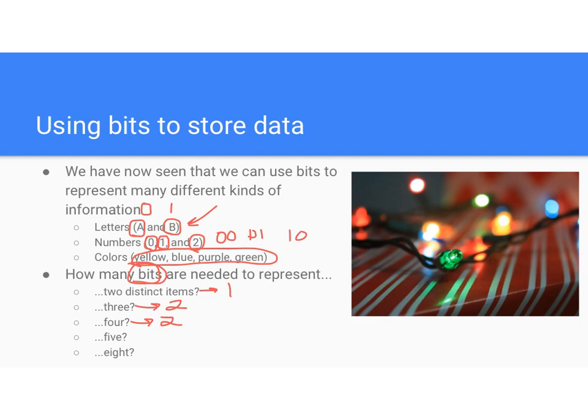The reason you only need two bits for four items: think about those two bits. You have on or off for the first, on or off for the second — that means the first light switch has two states, the other switch has two states, and you can represent two times two, or four, distinct things.